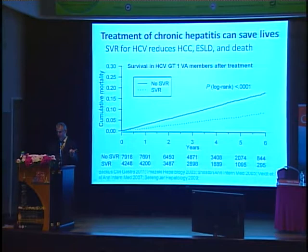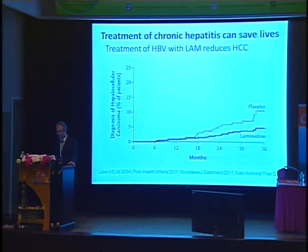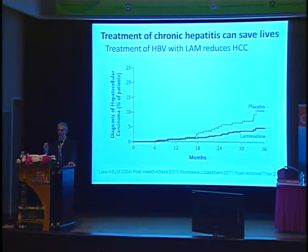With hepatitis C, there are several studies I could have chosen. This is one from a VA study in the United States — Veterans Hospitals — where mortality on this axis is compared in individuals who achieved a sustained virologic response compared to those who didn't. Higher mortality is associated with not achieving a sustained virologic response. And then with hepatitis B, first demonstrated here, you could see the effect of lamivudine reducing hepatocellular carcinoma and hepatocellular carcinoma-related mortality. So we have proof in principle that our treatments for hepatitis B and C can save lives.